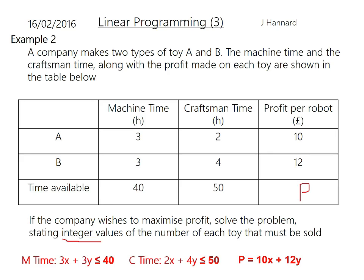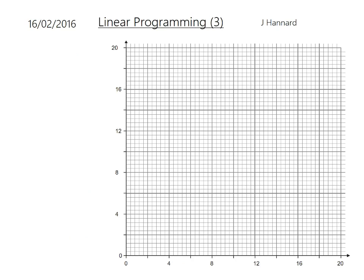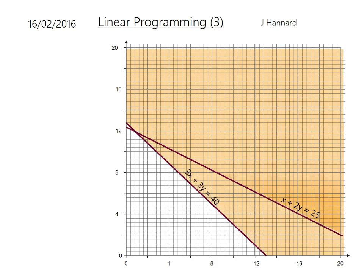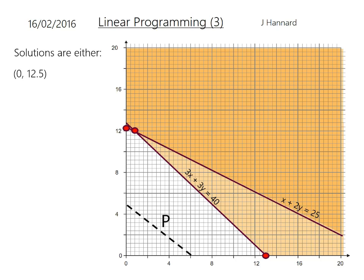Here's our lovely grid, and it is, funnily enough, in the correct scaling. Here are our inequalities — just plotting them now and shading out like that. There are three points that we're interested in, and that is where the objective function solutions lie. Going in a parallel style, we want to get as far out as possible, and I'm thinking it's possibly that point there.